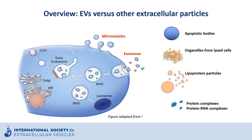Extracellular vesicles are derived from cells either by pinching from the plasma membrane or through fusion of intracellular compartments with the plasma membrane. They vary in size and in composition. There is a huge variety of types of extracellular vesicles, and one single cell type may in fact release different types of extracellular vesicles.